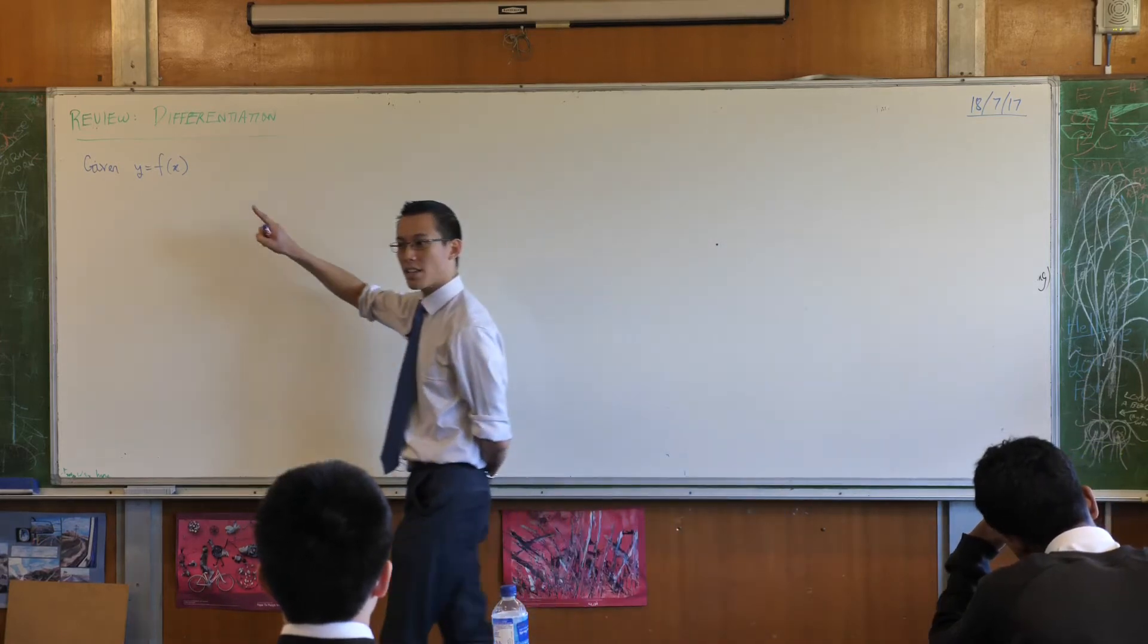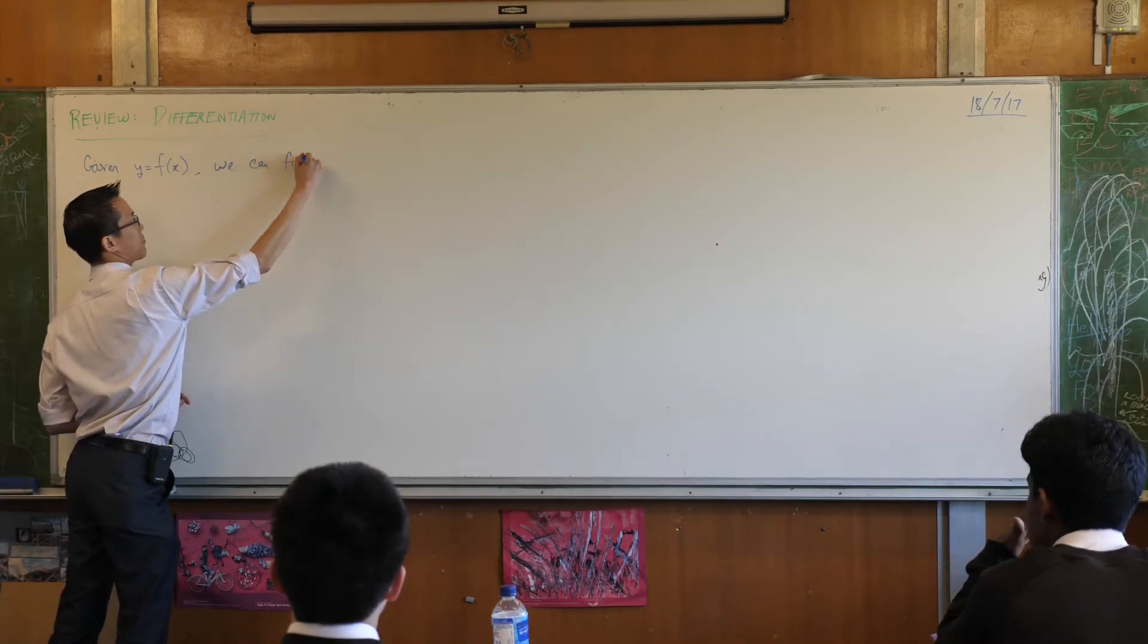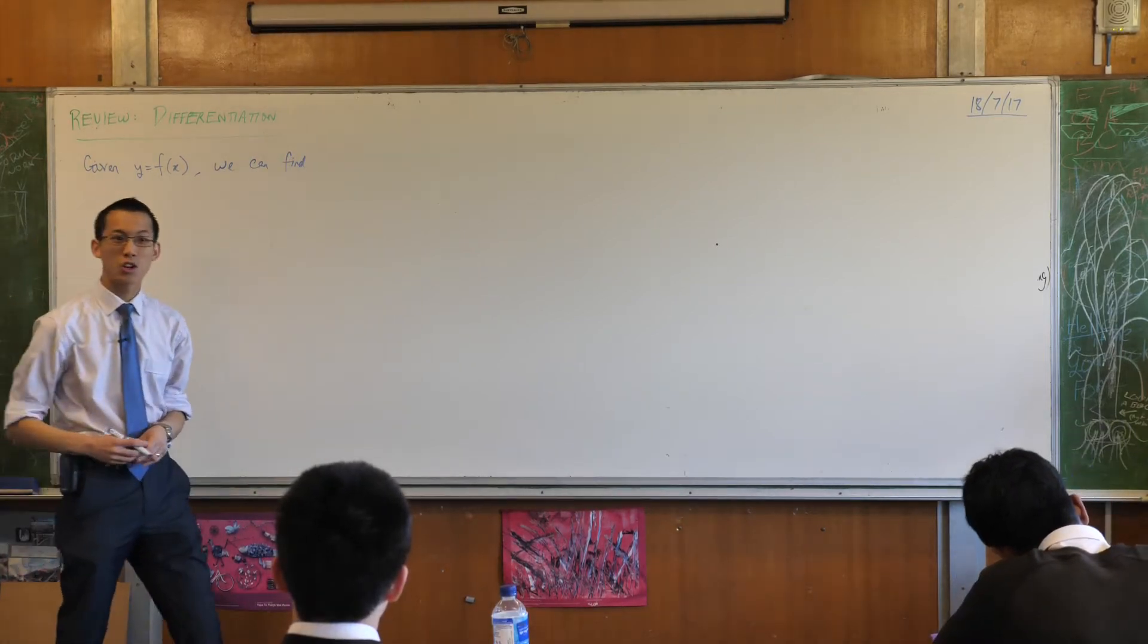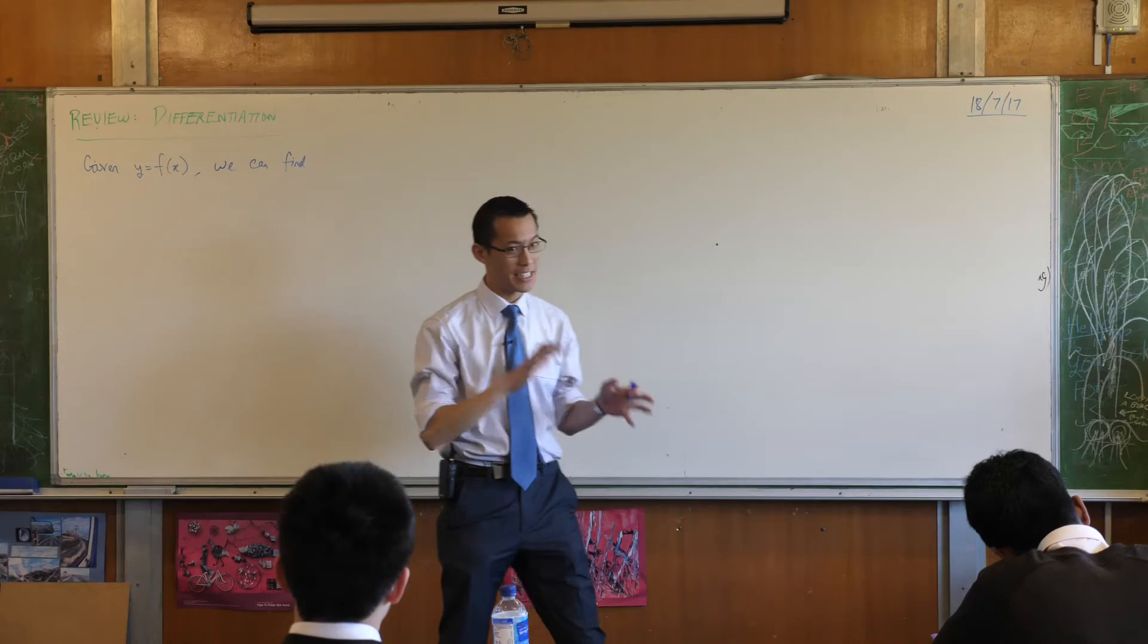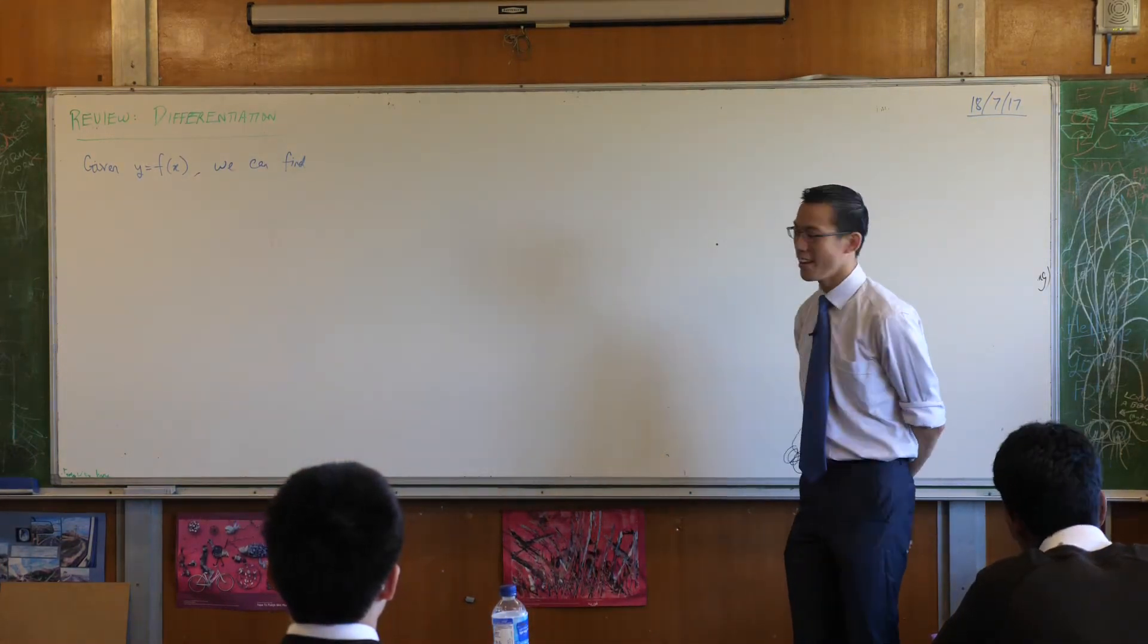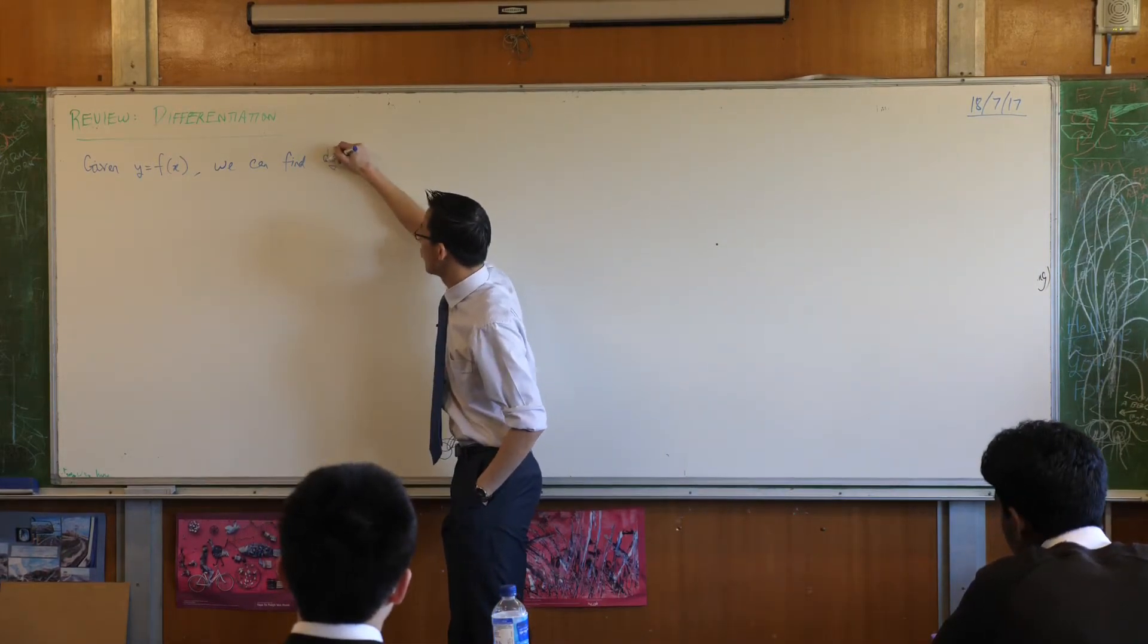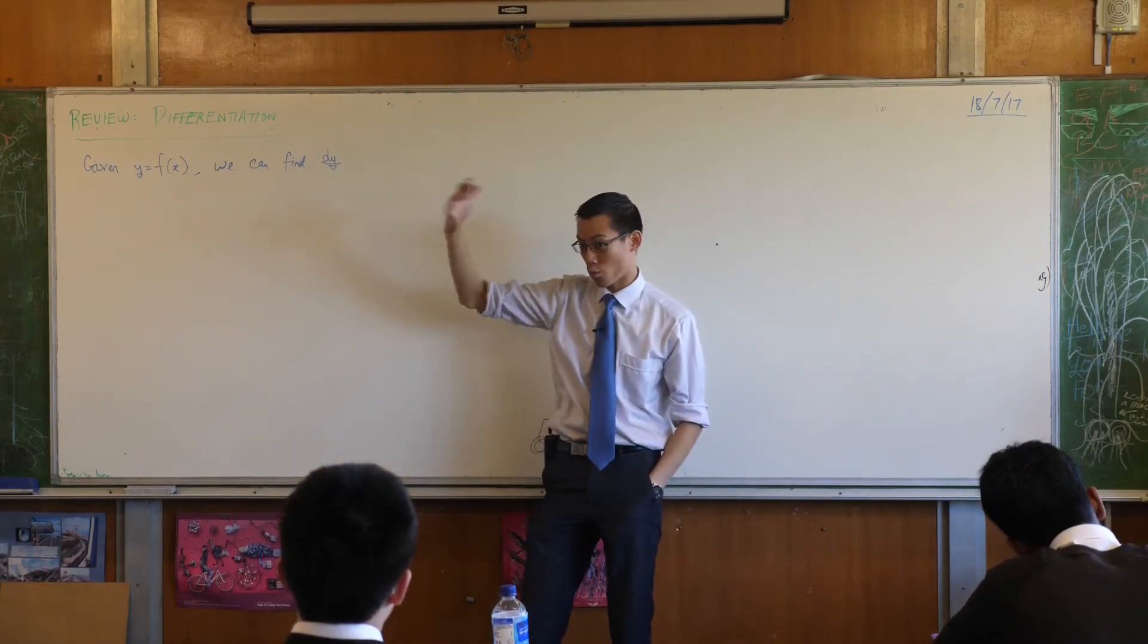Given y as a function of x, we can find what we call the gradient function. Being that it was based on gradient rise over run, if we use this y notation, we would say it's a change in y, that's rise, divided by a change in x, that's the run.